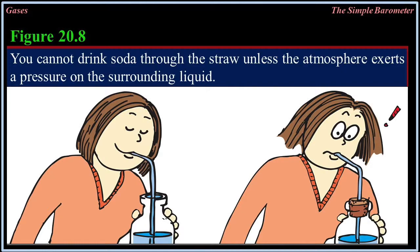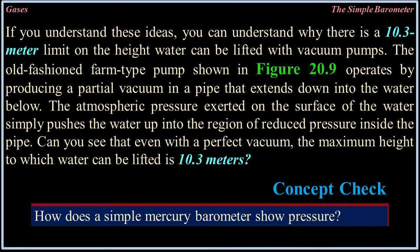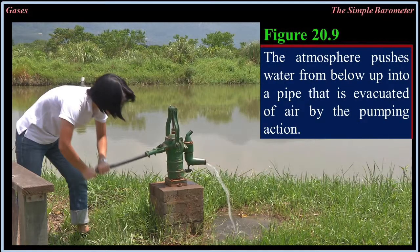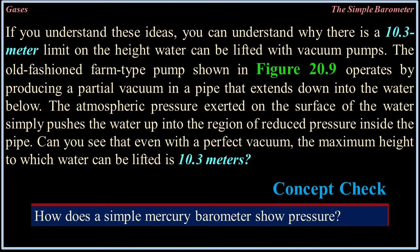Figure 20.8: You cannot drink soda through a straw unless the atmosphere exerts a pressure on the surrounding liquid. If you understand these ideas, you can understand why there is a 10.3 meter limit on the height water can be lifted with vacuum pumps. The old-fashioned farm-type pump operates by producing a partial vacuum in a pipe that extends down into the water. The atmospheric pressure exerted on the surface of the water simply pushes the water up into the region of reduced pressure inside the pipe. Even with a perfect vacuum, the maximum height to which water can be lifted is 10.3 meters.